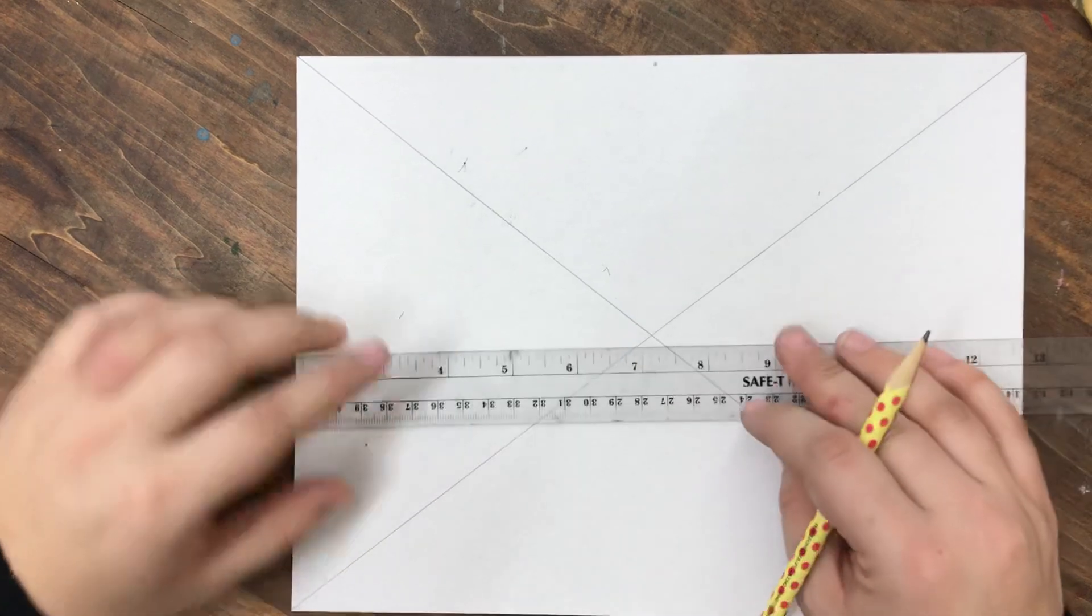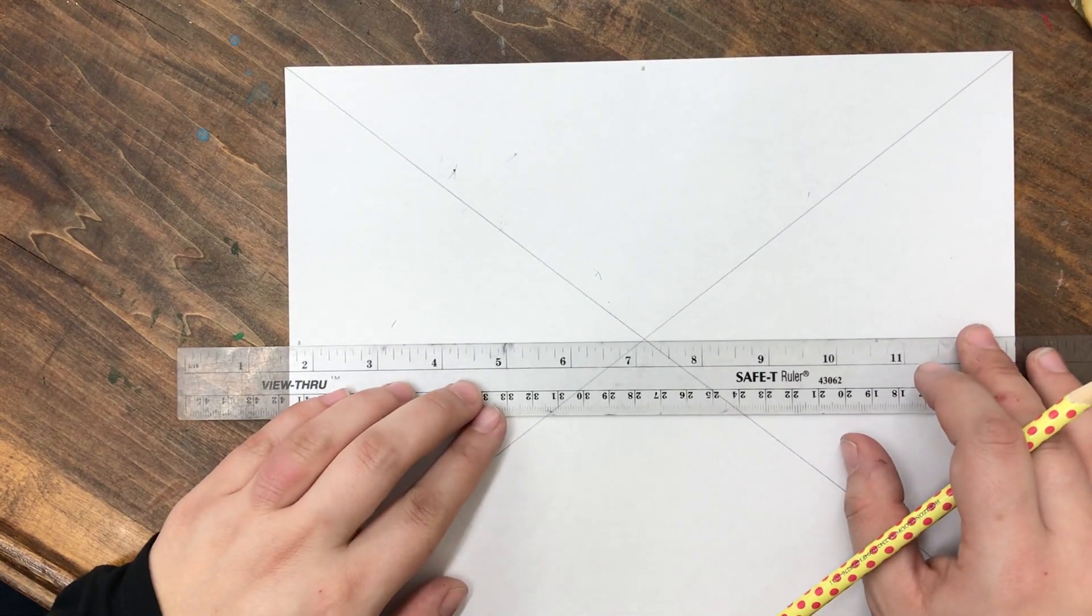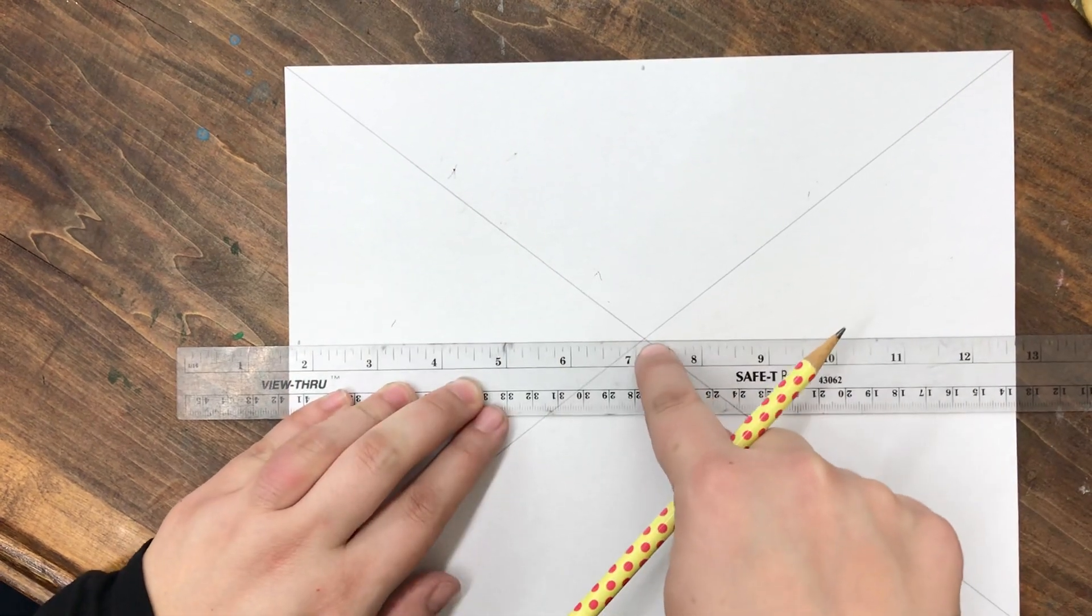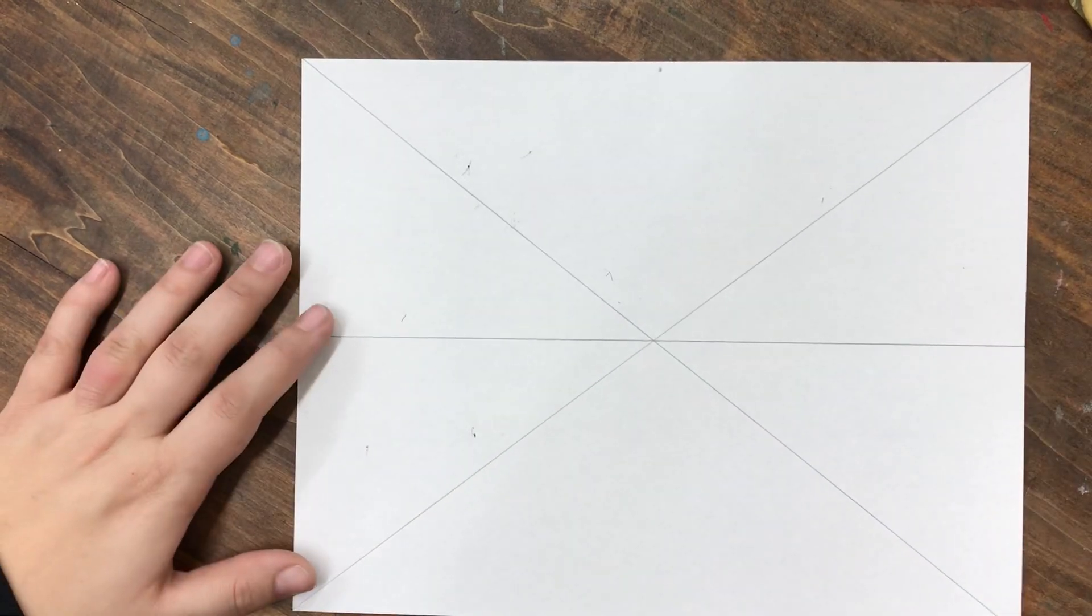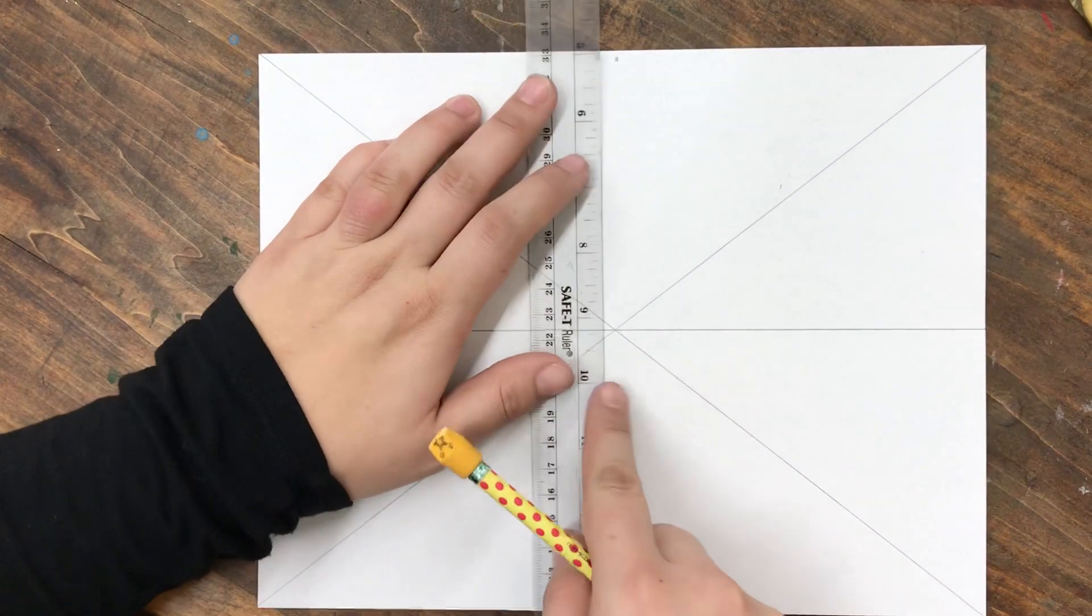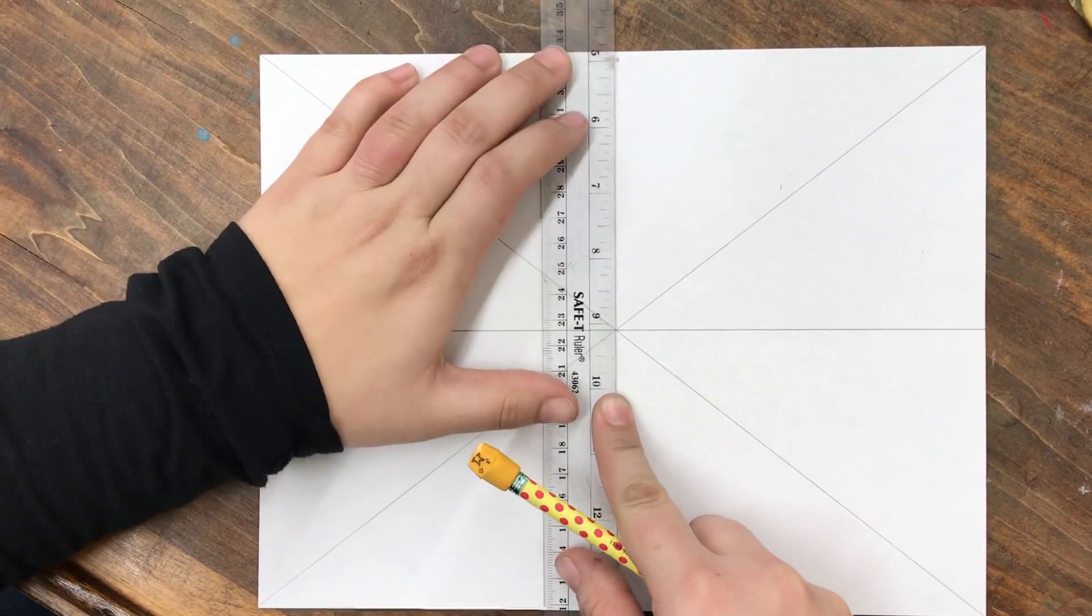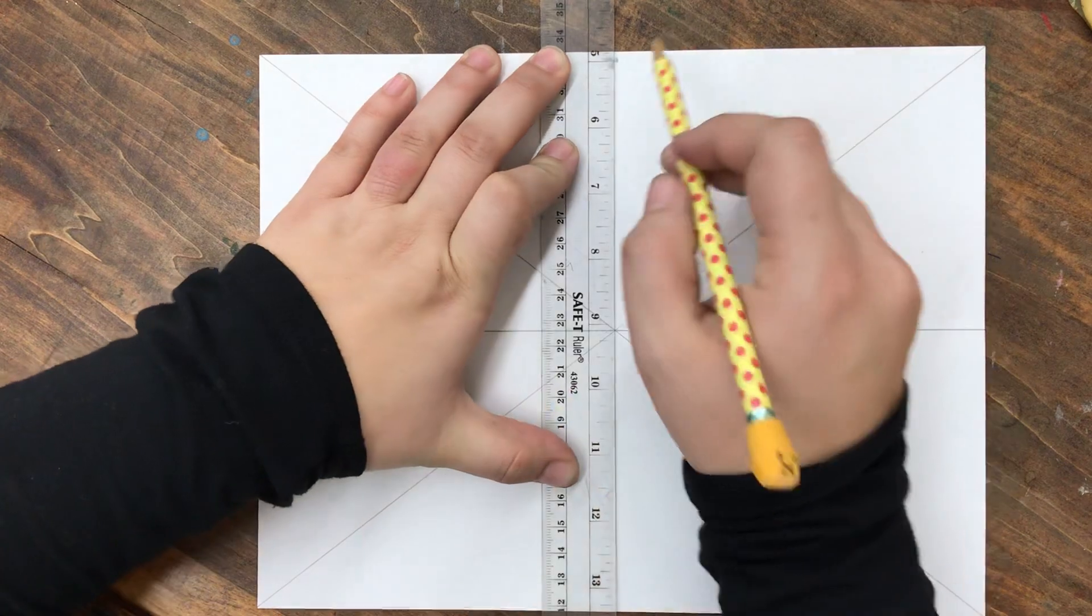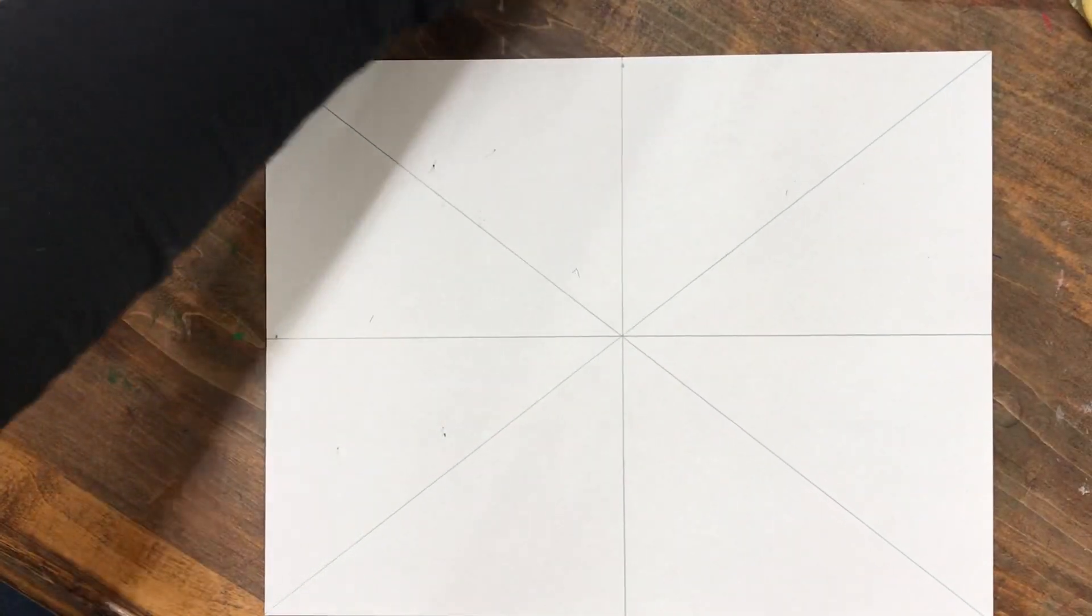I'm going to take my ruler and connect from the measured dot to the center of the X and drag a line across. This is the first part of our plus sign. Next I'm going to drag a line from the top point through the center of the X to create the other part of my plus sign.